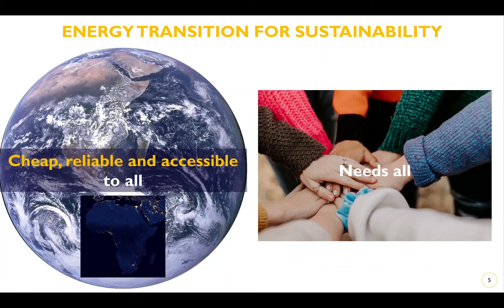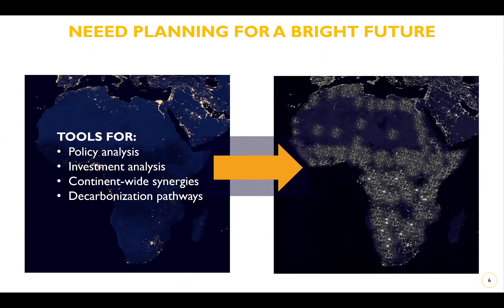That's why we have been talking about the energy transition to reach sustainability, but this is a very big goal for a very difficult task. The energy transition must be cheap, reliable, and accessible to all — and all means worldwide, all different regions and all populations, because we cannot leave anyone behind. To achieve this we need a large community, and that's why we are having this discussion today. To reach our goal we need accurate planning.